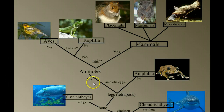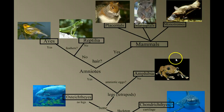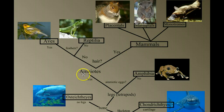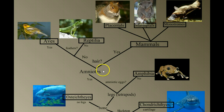Welcome to our fourth video in our series on vertebrate diversity. In our last video, we looked at the amphibians. Now we're going to head down the branch of the amniotes, those vertebrates with the amniotic egg. All reptiles, birds, and mammals are considered amniotes. We're going to talk a lot about what amniote means in this video, but let's finish working through our classification key.